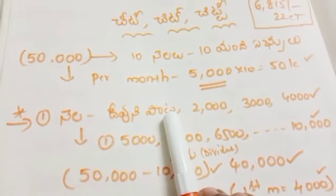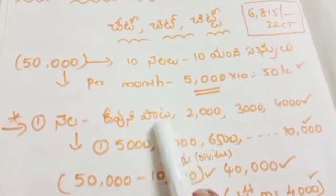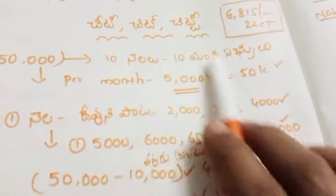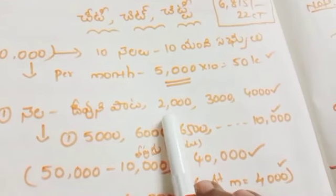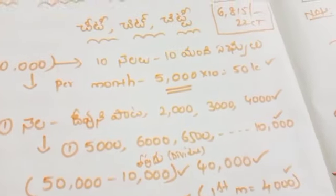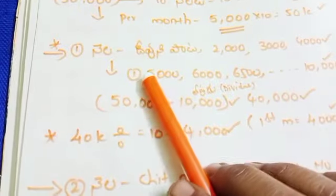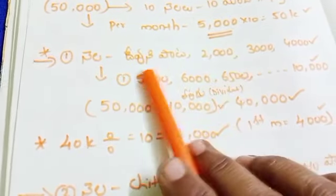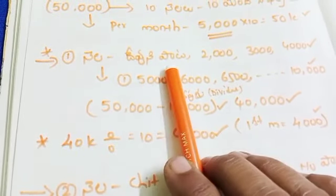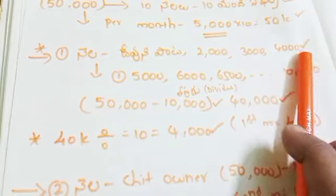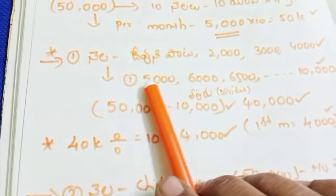First, we start with the first part of gold. We start with 1,000, 2,000, 3,000, 4,000. We will see the 2nd, 3rd, 4th, and begin with gold. We will start with 1st, 3rd, 4th, and we will start with the initial month, then start with the 5th.